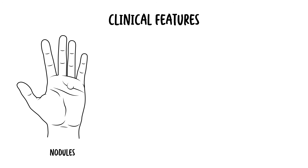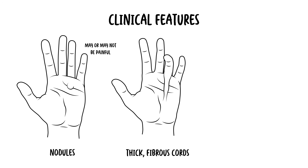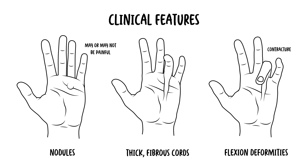Looking at the clinical features, the onset of Dupuytren's contracture is typically gradual, starting with development of nodules in the palm, which may or may not be painful. As the condition progresses, these nodules can extend to form thick fibrous cords extending into the fingers. The contracture of these cords leads to the characteristic flexion deformity. Patients often report difficulty performing tasks that require a flat hand, such as putting on gloves or shaking hands. In advanced cases, the contracture can significantly impair hand function.